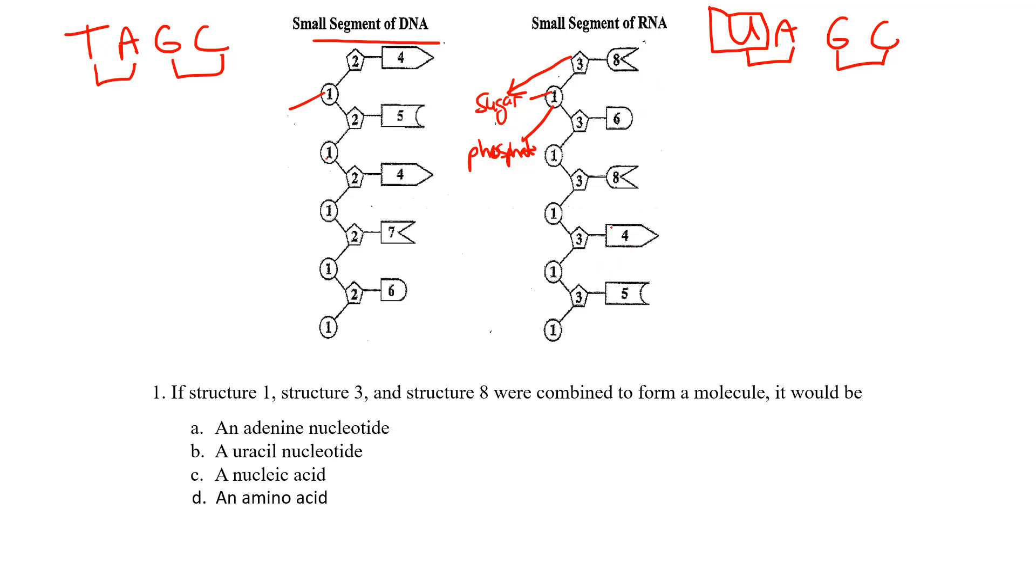So they're saying structure eight, that's this one, and they want to know when you combine those together, you're going to get - first of all we know that a nucleotide is made up of exactly that: the phosphate group, the sugar, right, and it's a five carbon sugar, and it's also going to have a base, one of the four bases.